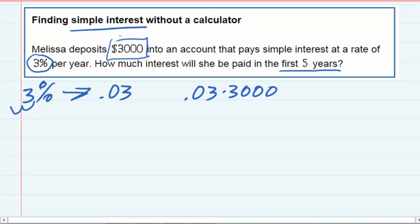0.03 times 3000 gives us $90. But again, that's just for one year. That's the first year.